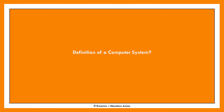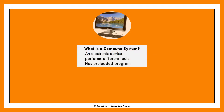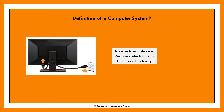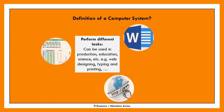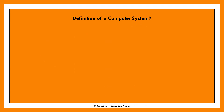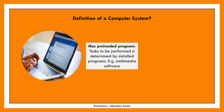A computer system is an electronic device that can perform different tasks based on predefined instructions. As an electronic device, it requires electricity to function effectively. It can be used to perform different kinds of tasks such as in education, production, science, technology, etc. — for example, typing and printing. The tasks to be performed are determined by the installed programs on the computer system. This means that a system with multimedia software can play music, while a system without multimedia software cannot play music.